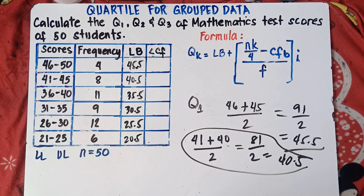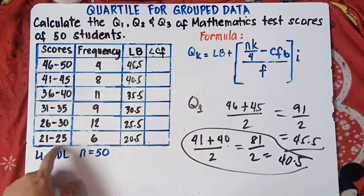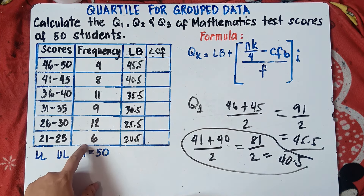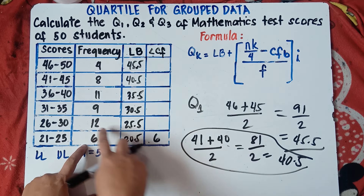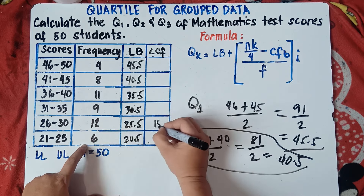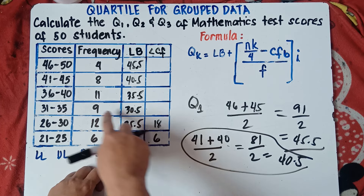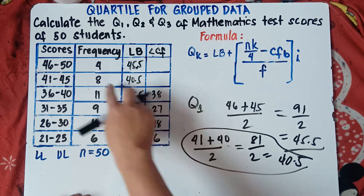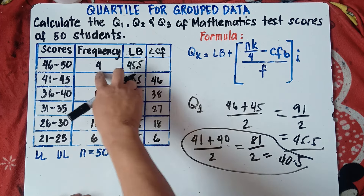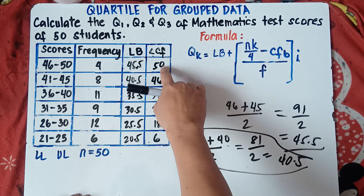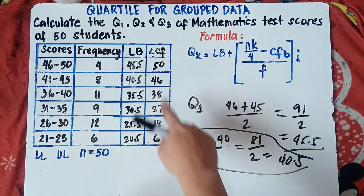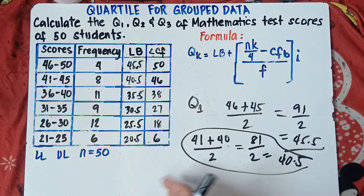Next step is the less than cumulative frequency. To get it, start at the lowest score — 21 to 25 — and simply copy the frequency. So copy 6. Then add diagonally: 6 plus 12 is 18, plus 9 is 27, plus 11 is 38, plus 8 is 46, plus 4 is 50. Your answer for the last less than CF should equal the total number of frequency, which is 50. So 50 equals 50 — the less than cumulative frequency is correct.